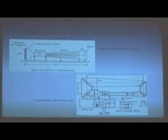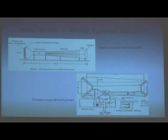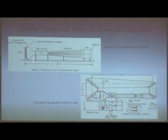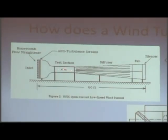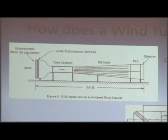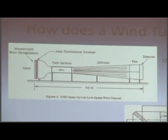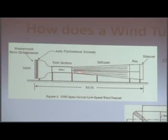In an open loop wind tunnel, you have an inlet where you can place a fan, followed by a honeycomb and screen filter to condition the airflow. The air is directed into the test section where your model is placed. After passing the model, air enters a diffuser which slows it down before reaching the fan, which exhausts it to the atmosphere. It's very simple, cost effective, and cheap.